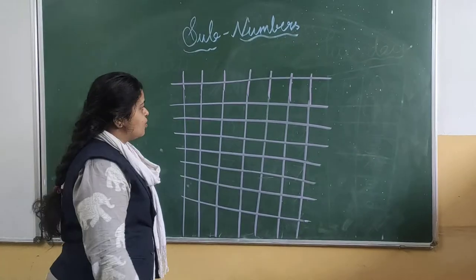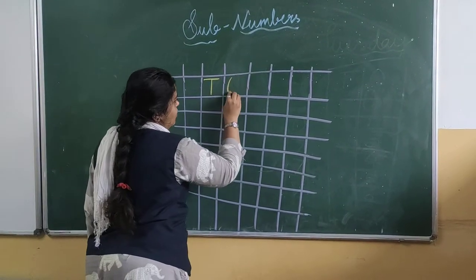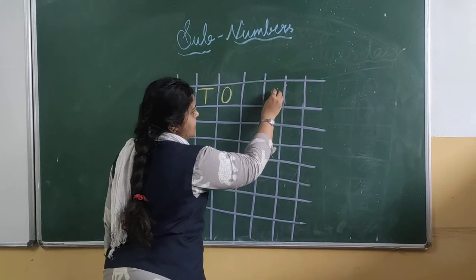Before that we need to know the place values. T for 10s and O for 1s. Leave a box as I said.